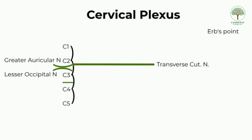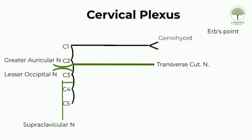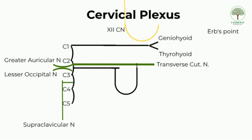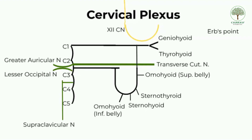The last cutaneous branch is the supraclavicular nerve from nerve roots C3 and C4, which provides sensation to the supraclavicular fossa, upper thoracic region, and sternoclavicular joints. The motor branches of the cervical plexus lie deep to the sensory branches. From the root of C1, the spinal nerve supplies the geniohyoid and thyrohyoid muscles, traveling closely with the 12th cranial nerve — the hypoglossal nerve. The nerve roots C1, C2, and C3 form a loop called the ansa cervicalis, which gives off branches to the sternohyoid, sternothyroid, and superior and inferior bellies of the omohyoid — all infrahyoid muscles that depress the hyoid bone.